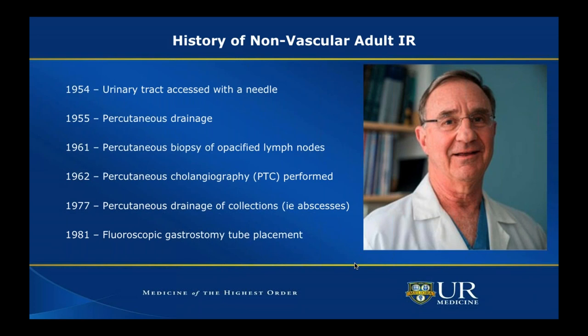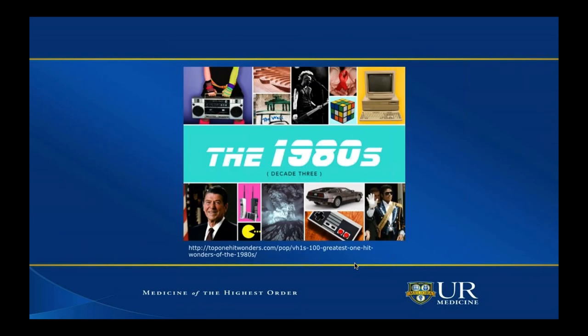Non-vascular adult interventional radiology also saw many developments from the 1950s through the 1980s, including access for nephrostomy tubes, studies of the urinary tract, cholangiography, and gastrostomy tube placement. That's a brief history of adult IR — now I'll put things in the context of pediatric interventional radiology.